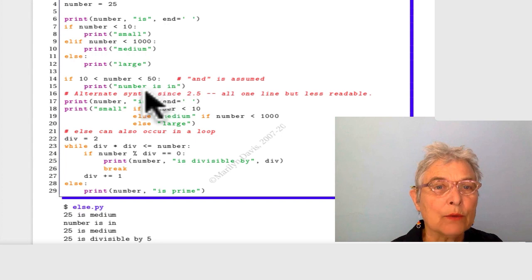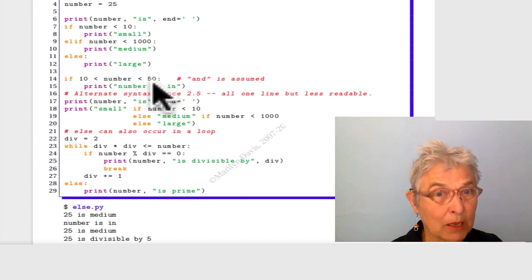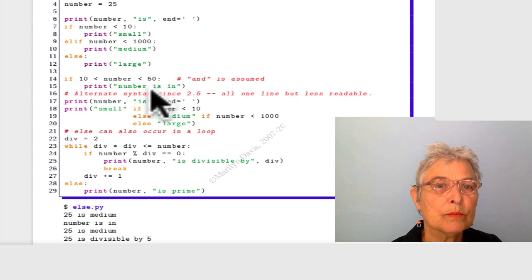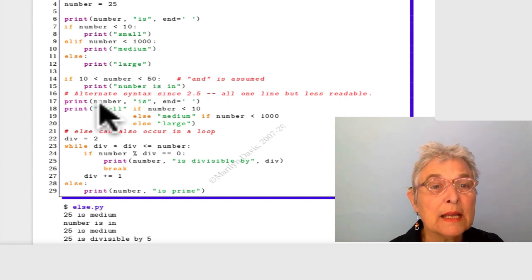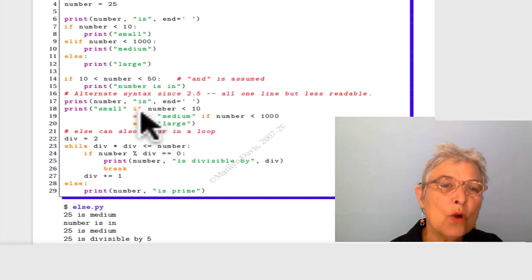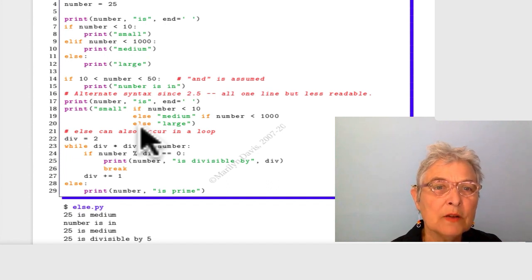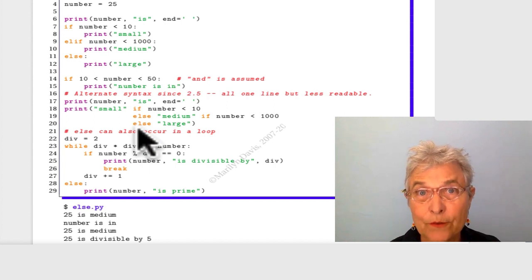This is available in the language. If the number is greater than 10 and less than 50, so the and isn't in there, but it's assumed number is in. We see that it is. Once again, I'm saying number is and equals space. And this form of a conditional is available since Python 2.5. Now when you read it, it reads nicely, but it is different from what you're used to from other C-based languages.